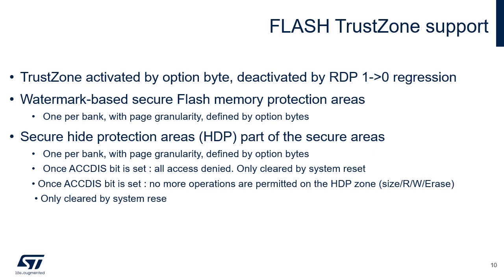When TrustZone security is active, a part of the flash memory can be protected against non-secure read accesses. Deactivation of TrustZone is only possible when the readout protection, RDP, is changed from level 1 to level 0. Up to two different non-volatile secure areas can be defined by option bytes and can be read or written only by a secure access, one area per bank with a page granularity. Each of them supports a secure hide protection area, HDP, starting at the same start page offset and ending at a programmable end page offset. The contents of the secure HDP area is marked as non-accessible after the corresponding HDP_ACCDIS bit is set to 1. This is used to prevent subsequent access to a part of the flash and to isolate the secure boot code and data from both secure and non-secure application codes.